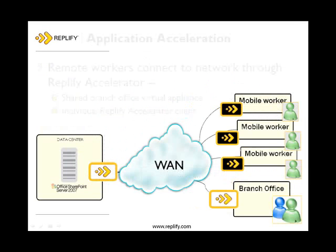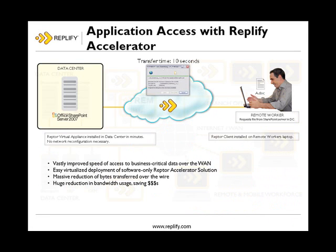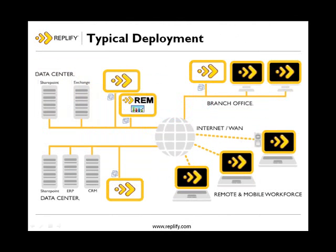The solution is to deploy Replify in the form of a virtual appliance running on standard commodity hardware in each site, and in the form of a PC client for any laptops which may roam. With the Replify accelerator deployed, access times are greatly reduced, bandwidth demands are greatly reduced, and both of these save you money. Here's a typical deployment: a virtual appliance, or VA, in each data center, and a Replify client in each roaming laptop. You'll also see the Replify Enterprise Manager, or REM, which provides a single point of management and control.